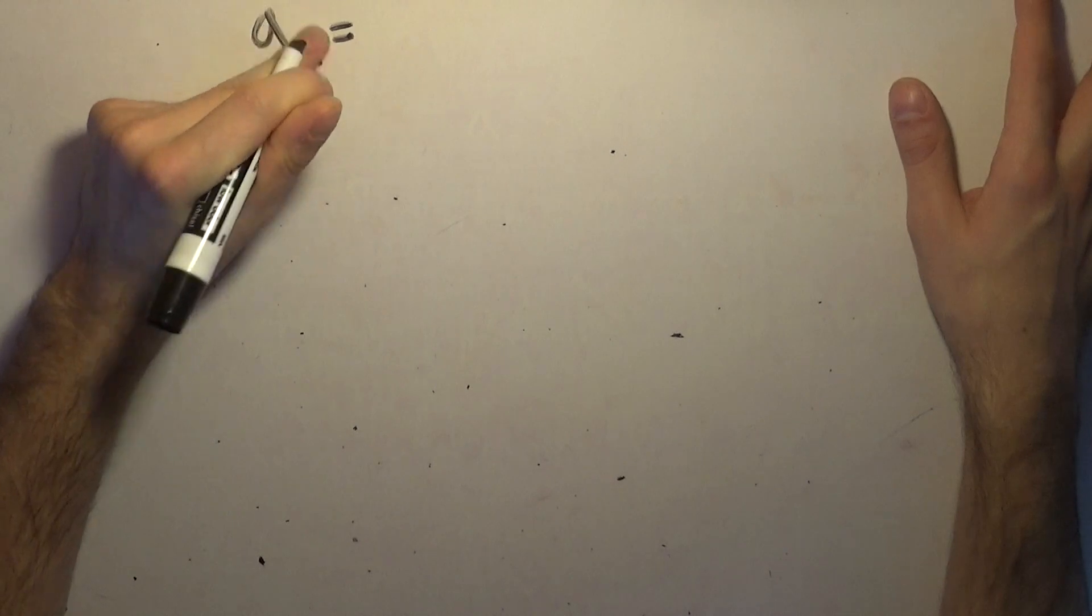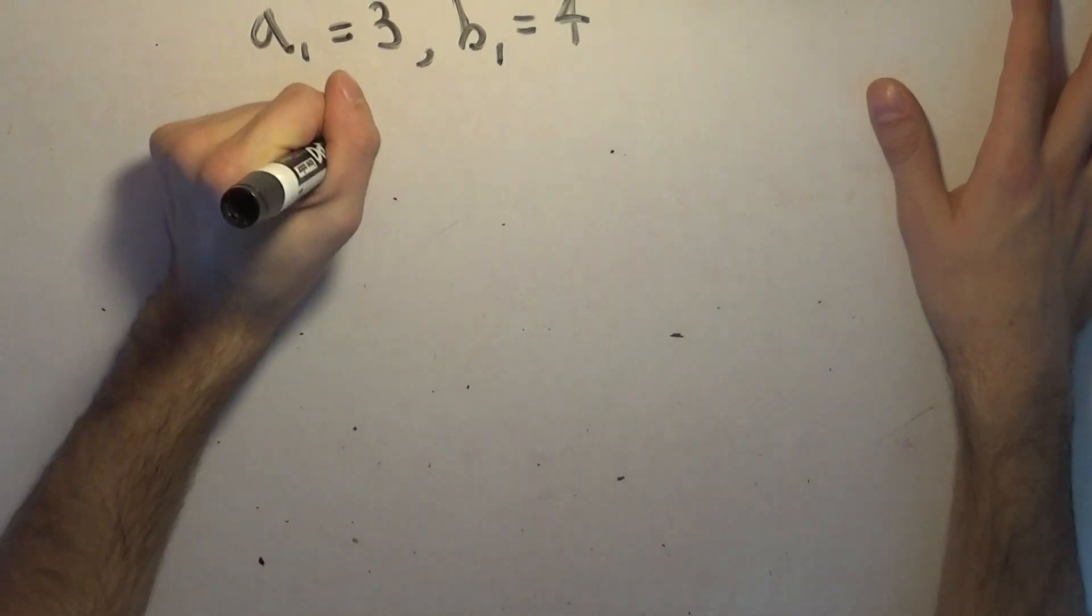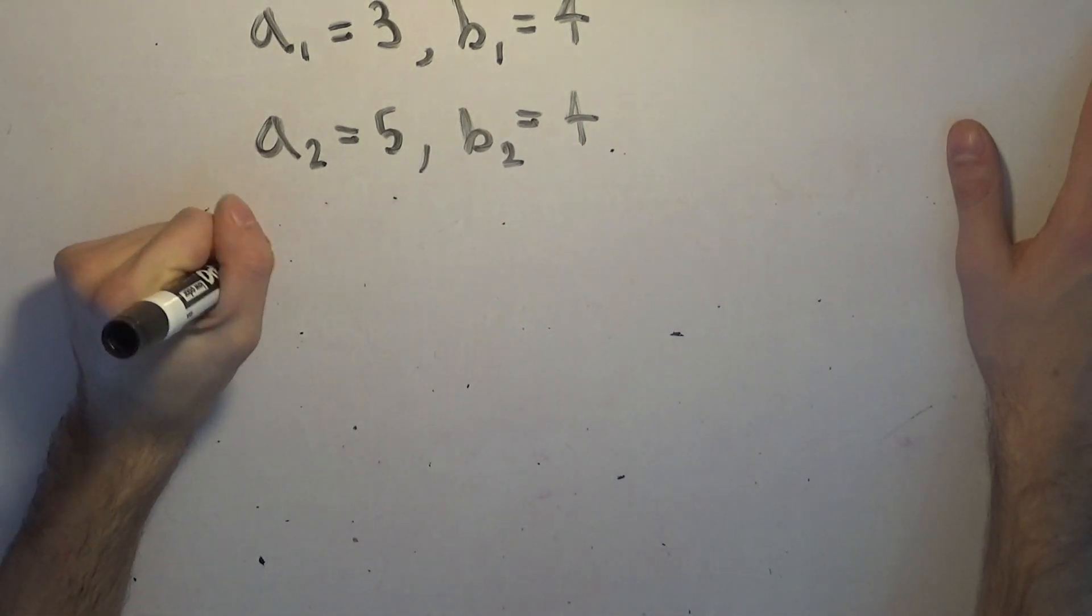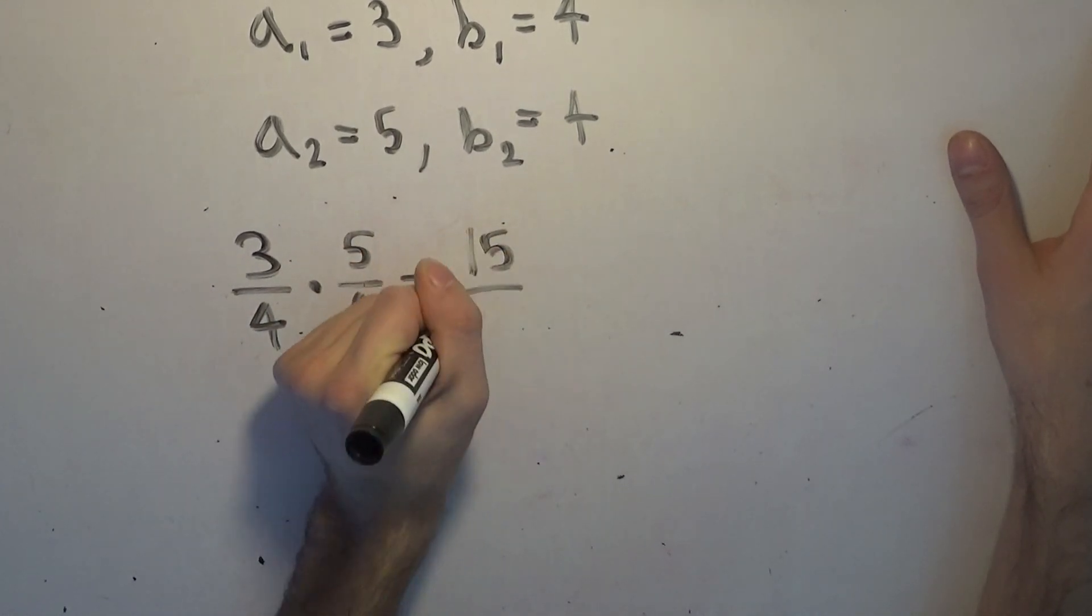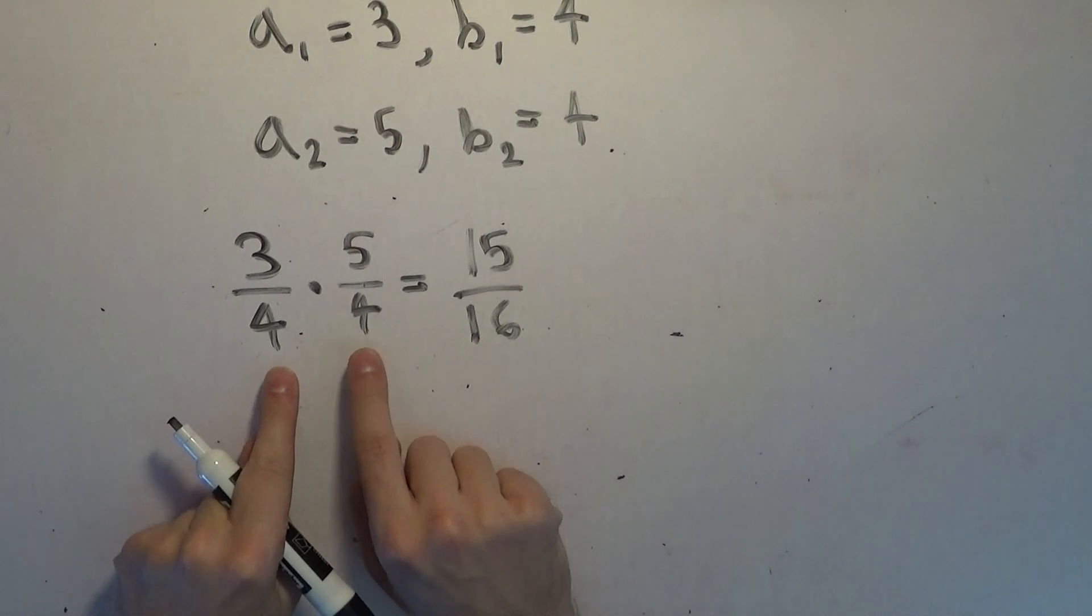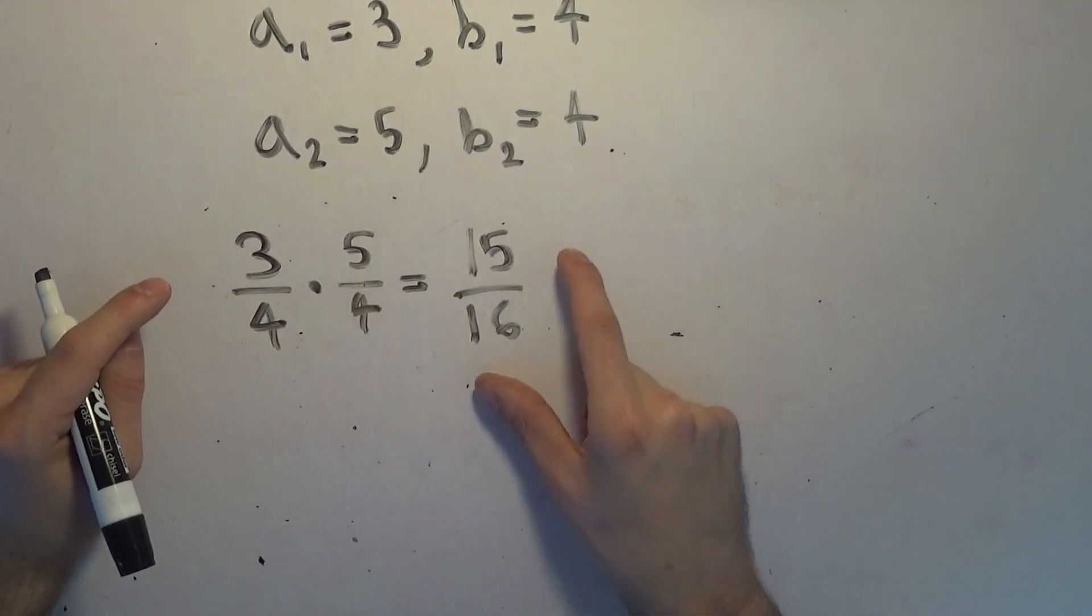So what's my counterexample? I'm going to actually tell you what the terms are. I can give you the recursion of it. So the first thing is A_1 equals 3 and B_1 equals 4, and A_2 equals 5 and B_2 equals 4. So the product of the first two terms is 3 over 4 times 5 over 4, which is going to give us exactly 15 over 16. Notice there are only odd numbers in the numerator and there are only even numbers in the denominator.